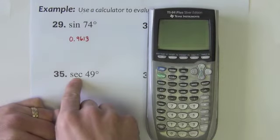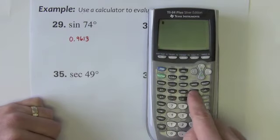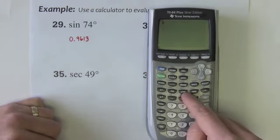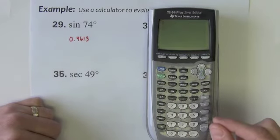Now you'll notice secant is what I'm after and there is not a secant button. All the calculator gives me is sine cosine tangent. Well there's not a secant button because we can find secant easily using the cosine button. Secant is cosine's reciprocal.